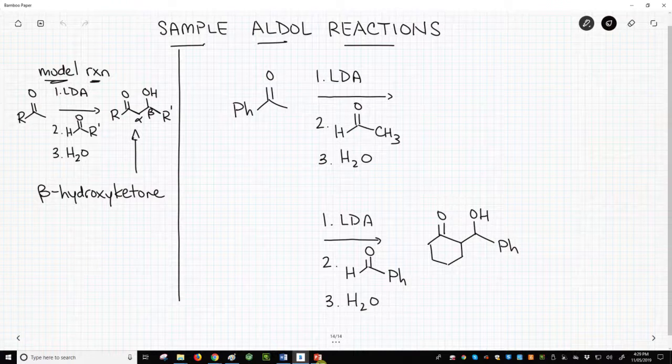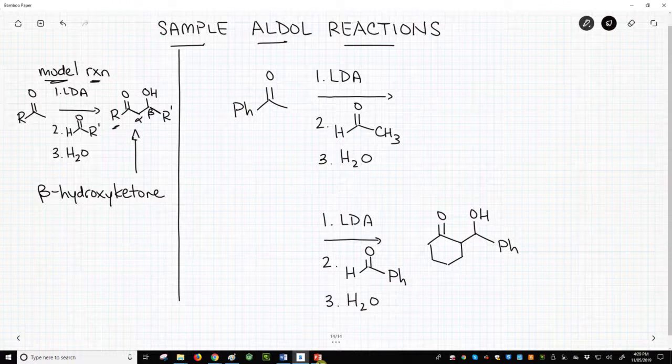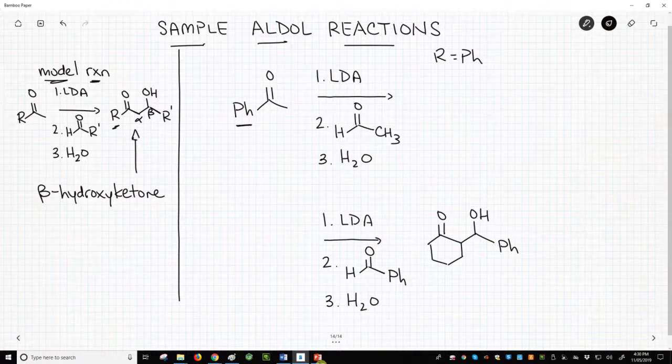Now, if we look at our model on the left, we can say that our R group is phenyl Ph. Our R prime group is methyl from our aldehyde.